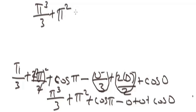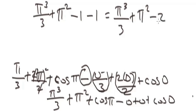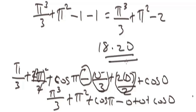Now, cos pi gives us negative one, and cos zero gives us one. Because of the minus sign, this becomes minus one minus one, which is minus two. So when you simplify, you get pi to the power of 3 over 3, plus pi squared, minus two. When you punch this into the calculator, you get 18.20 as the final answer.